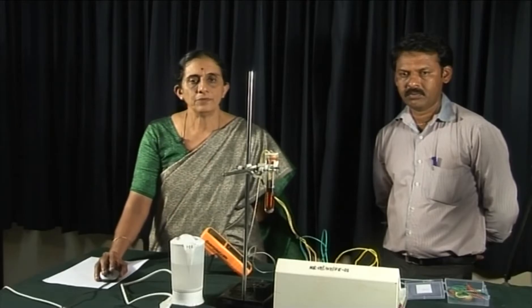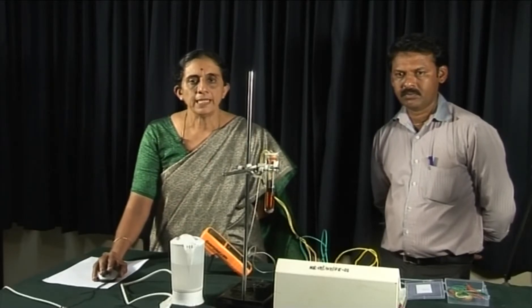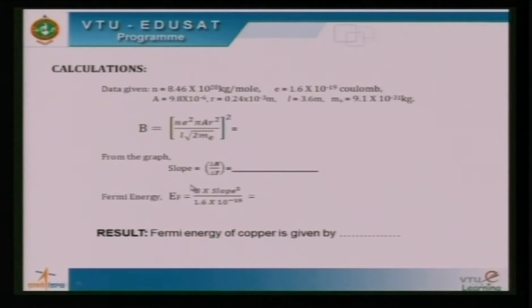We have to determine B separately and insert it in the formula here so that it is easier to determine the value of the Fermi energy of copper in electron volt.